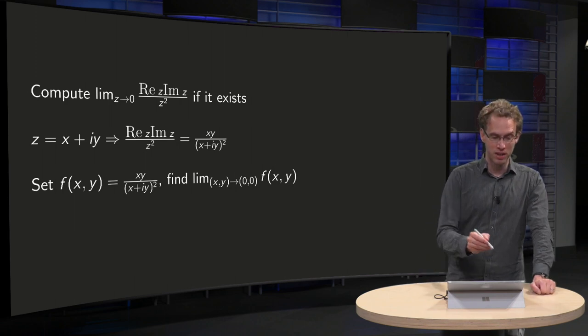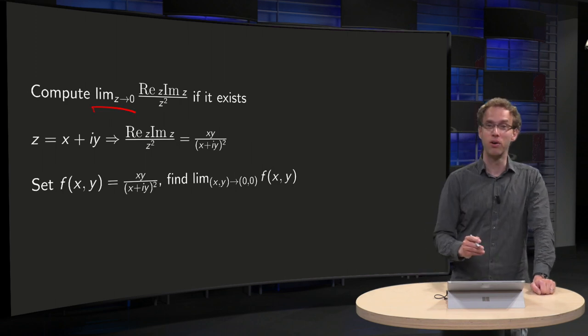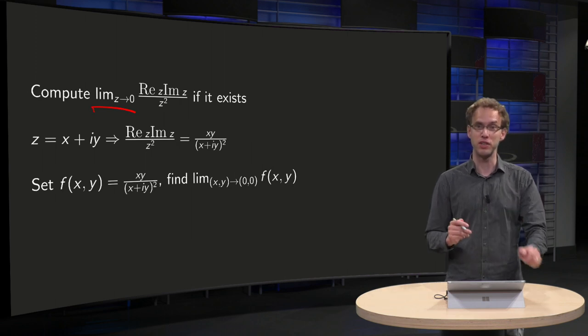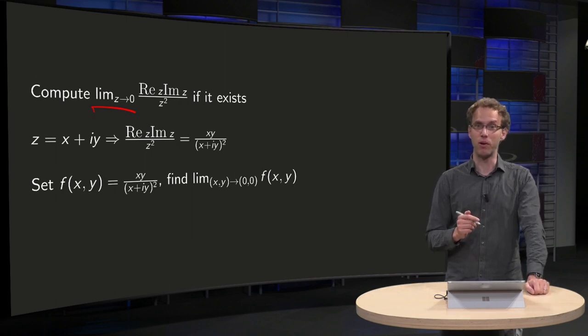So we have the following limit: z to 0 of the real part of z times the imaginary part of z divided by z squared. So how can we try to do that?